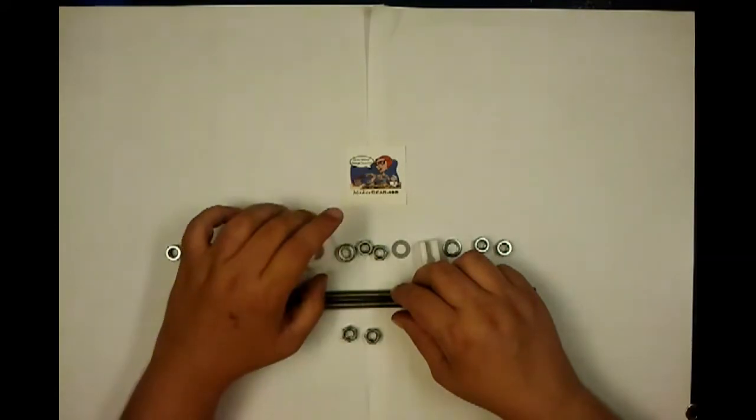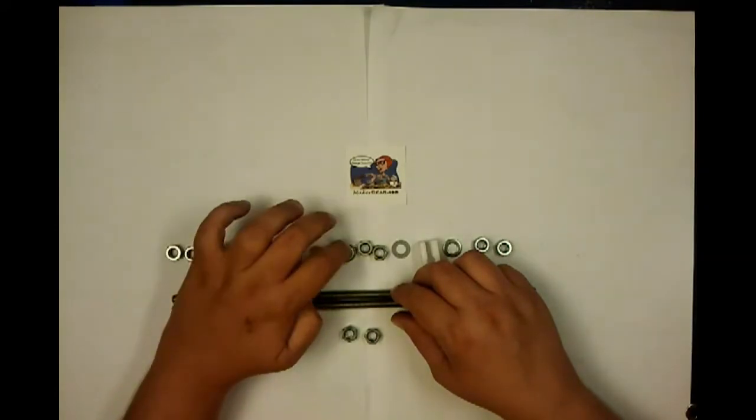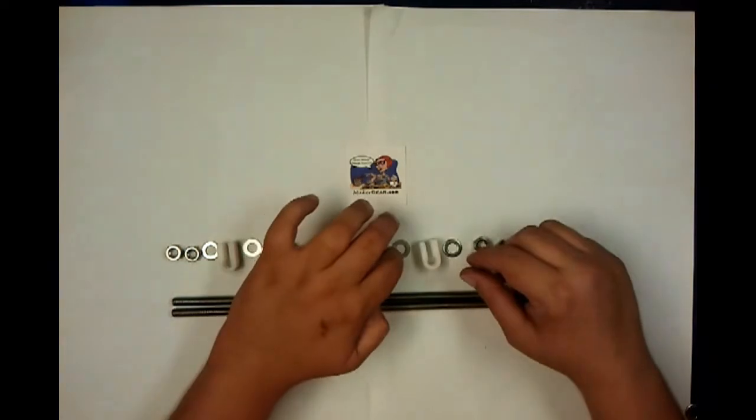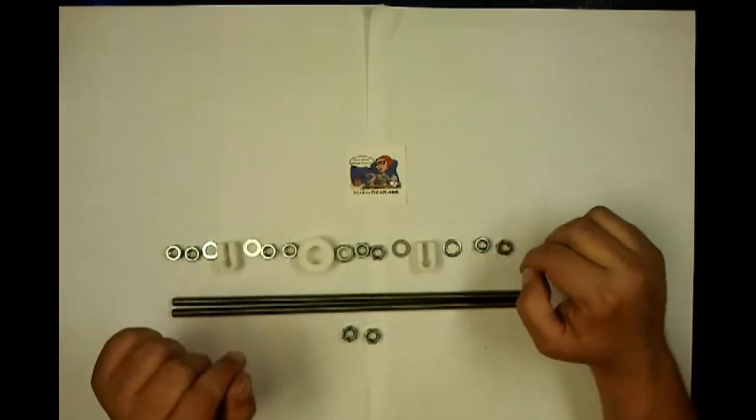The idler integrated together, the printed part in the bearing, nut, nut, washer, rod clamp, washer, and then two nuts.